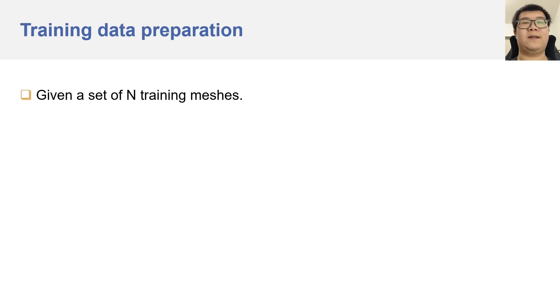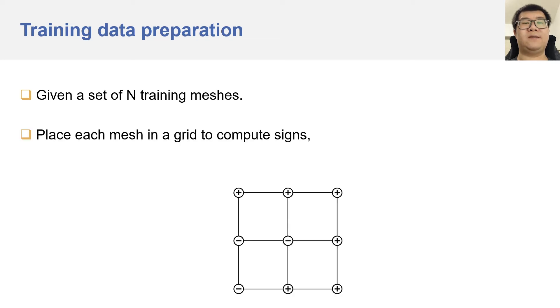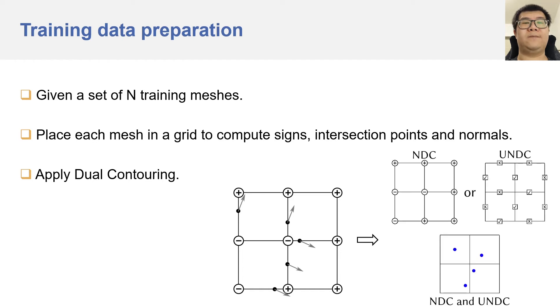To prepare the training data, we need a set of meshes. For each mesh, we place it in a grid to compute signs, intersection points, and their normals. Then we basically apply dual contouring to obtain the ground truth output grids. The vertex signs are simply the vertex signs. The edge intersection flags are obtained by checking whether there are intersection points on those edges. And the vertex locations can be obtained by solving the quadratic error functions in dual contouring.